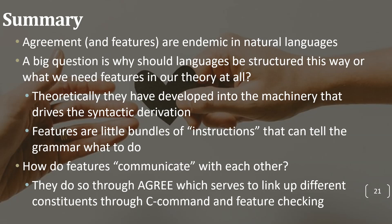Grammatical features are little bundles of instructions that tell the grammar what to do to build a tree. These features communicate through the agreement mechanism, which links different constituents through C-command and feature checking. In later lectures on movement and transformations, you will be able to see how different feature bundles are instrumental in creating and driving different movements inside syntactic trees and the derivations themselves.